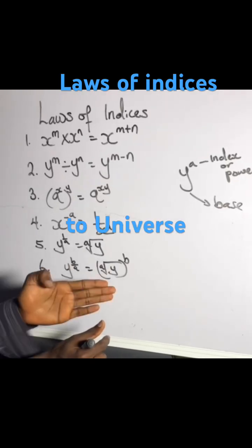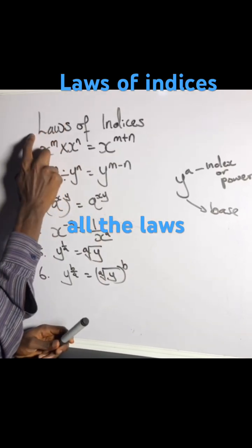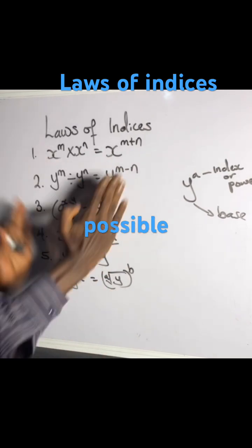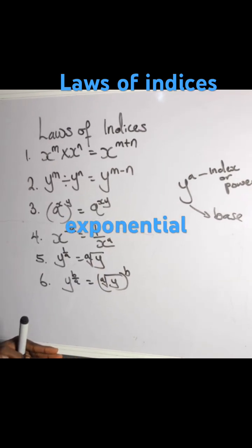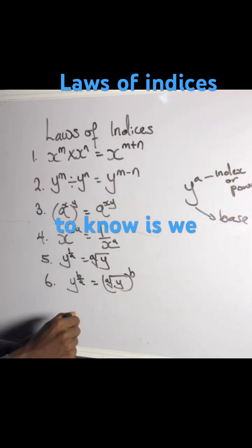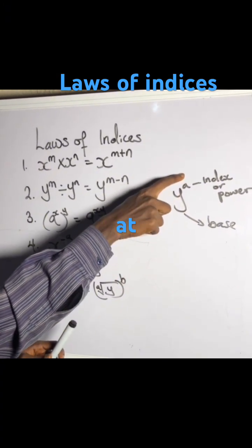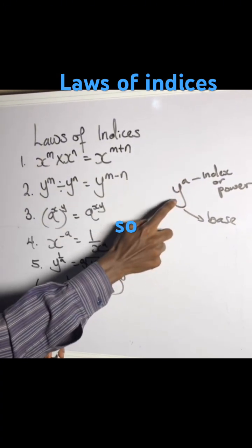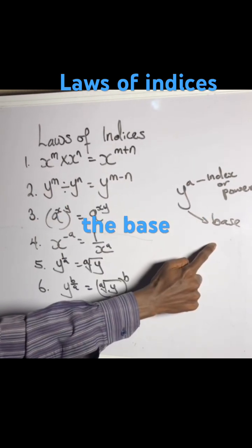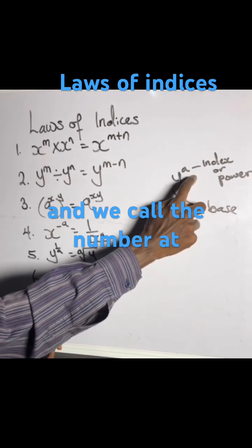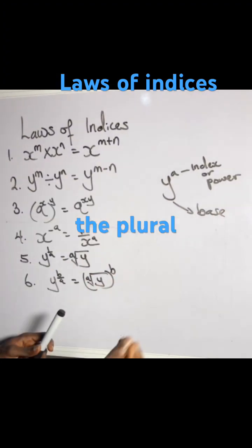Welcome to university. I want to explain all the laws of indices — all possible situations in exponential problems. The first thing you gotta know is we have a bigger number carrying a smaller number at the top. The bigger number, the one carrying the smaller one, we call it the base. And we call the number at the top the index, or power.